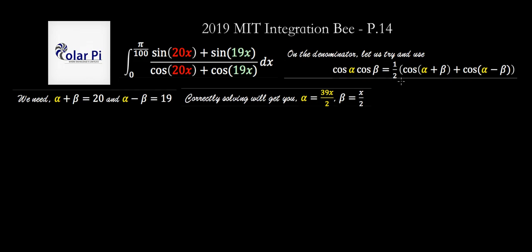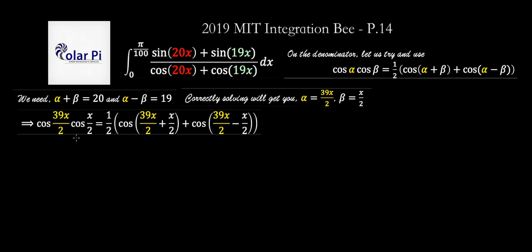Meaning here in this equation we should use alpha is 39 over 2x and beta is half x. And doing so, we see that we can write this here—this here is this left-hand side right here. And the right-hand side here, now in here we're going to get 40x divided by 2, that's 20x as we'd like, and then here 19x.